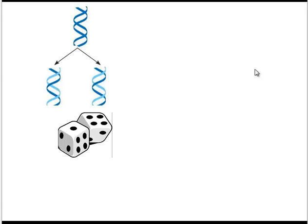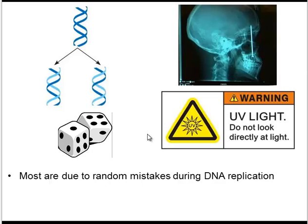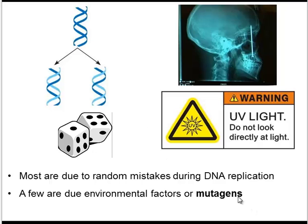Now that we've seen types of mutations, what causes them? The fact is that most mutations are random — they're just mistakes that occur during DNA replication. Proofreading enzymes catch most of the mistakes, but every once in a while some get missed, and that's just bad luck or good luck depending on the mutation. However, there are some mutations that are due to environmental factors, like radiation, UV light, or chemicals. These are agents in the environment that can cause base changes in the DNA, and they are known as mutagens.